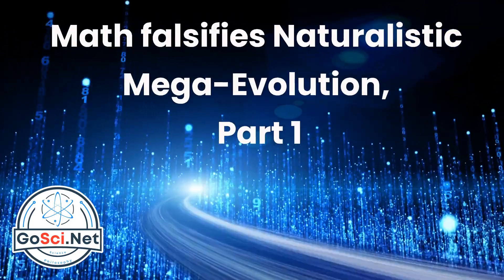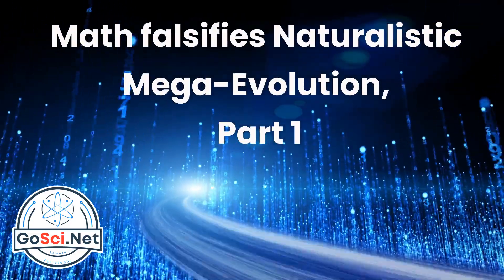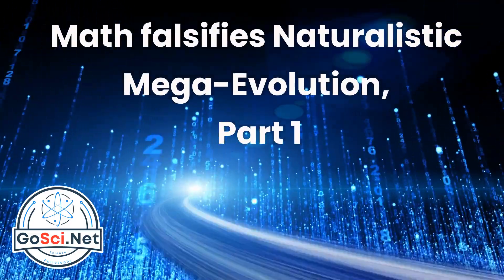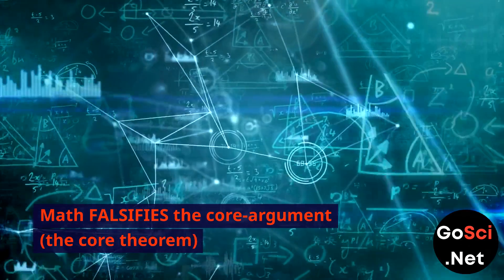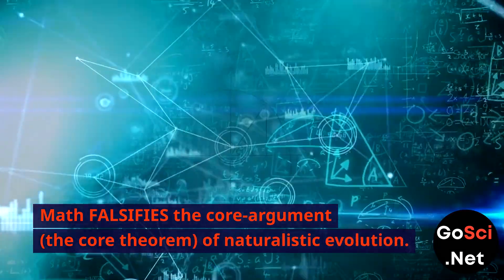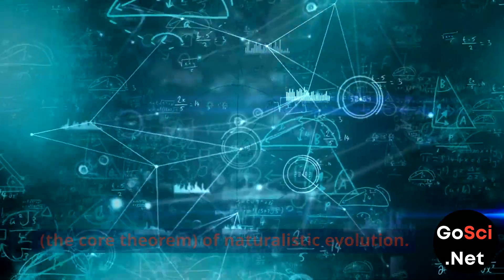Math falsifies naturalistic megaevolution, part 1. Math falsifies the core argument — the core theorem — of naturalistic evolution.